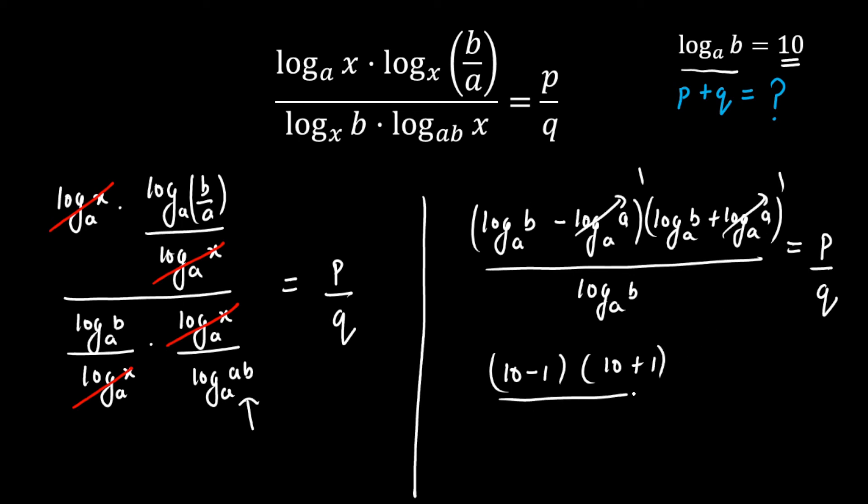And from here I can say this is 9 and this is 11, so 99 upon 10. As you can see I cannot further simplify these two, so from here I can confirm that p and q, 99 and 10, are co-primes to each other. Here p plus q will be equal to 109. If I add these two, this is our final answer.